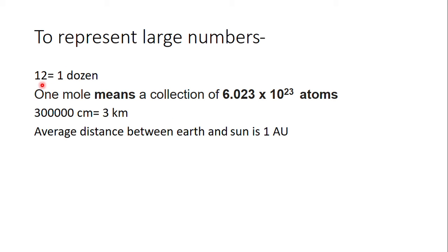As you already know that if we have 12 apples, we will represent them as 1 dozen. So, in order to have easy counting, we will represent 12 mangoes or 12 oranges as 1 dozen.